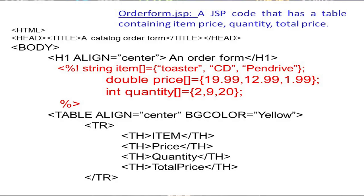The objective of this lecture is to develop a small web application. The program name is 'order_form.jsp'. This JSP code contains a table with fields: item, price, quantity, and total price. These are the three input fields — item, price, and quantity — and the fourth field is the calculated total price. The program starts with HTML, and inside the head section we have the title 'A Catalog Order Form'.